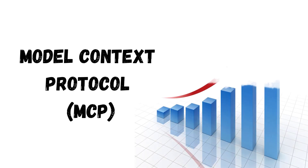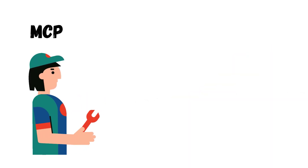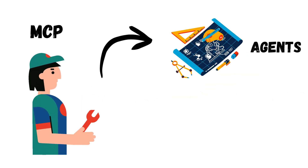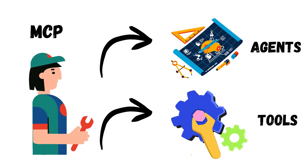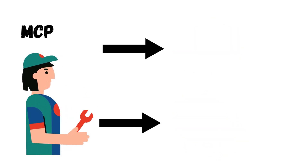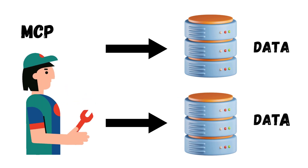MCP, or Model Context Protocol, has been trending right now. MCP is an awesome tool that allows you to build agents and use pre-built tools. It also helps you connect AI models to different data sources.